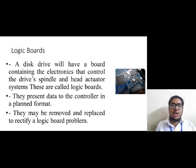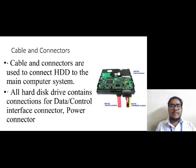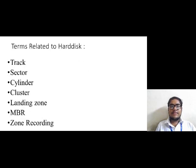Now we will discuss logic boards. A disk drive has a board containing the electronics that control the drive spindle and head actuator system — these are called logic boards. They present data to the controller in the planned format and may be removed and replaced to rectify a logic board problem. Cables and connectors are used to connect the HDD to the main computer system. All hard disk drives contain connections for a data control interface connector and power connector.